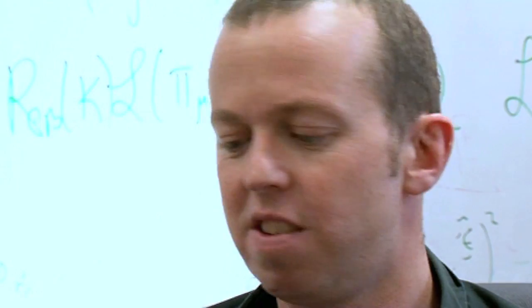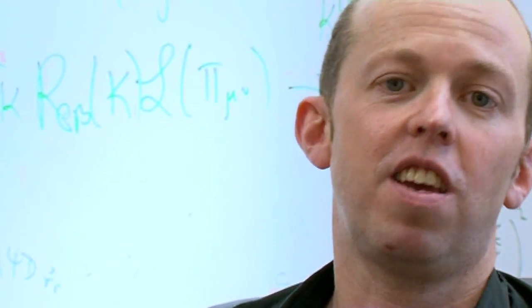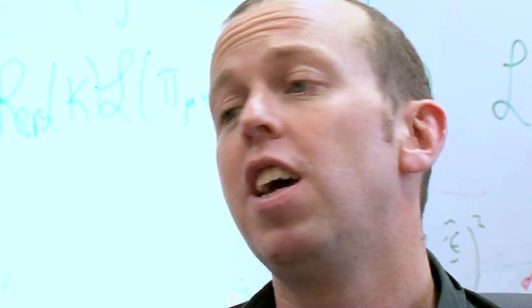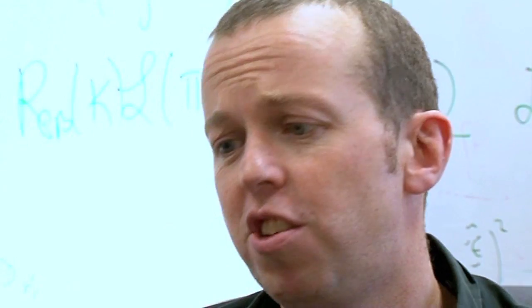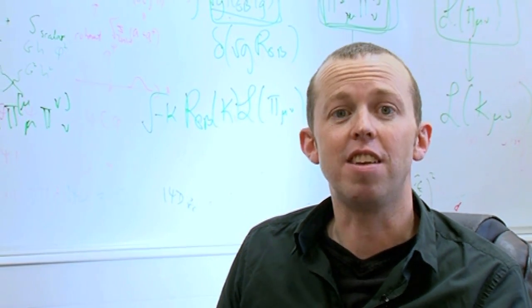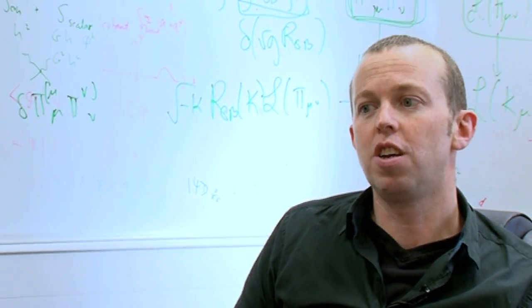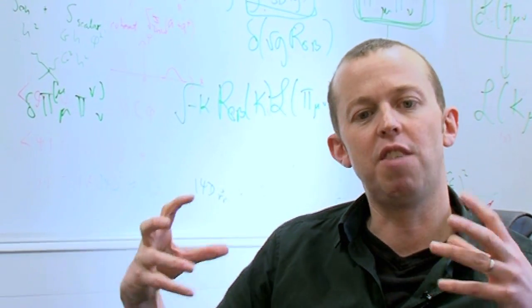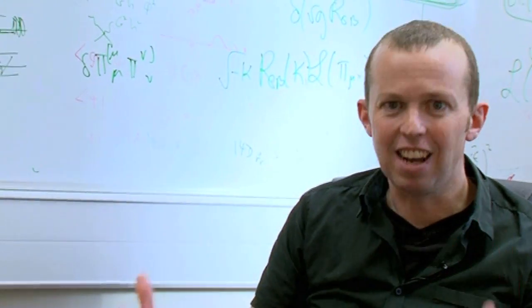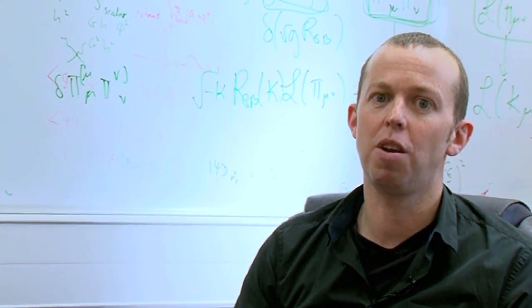Hawking has had three main scientific achievements in his career. The first is his singularity theorems. What Hawking and Roger Penrose realized is that if you assume matter has some generic properties that every sensible type of matter that we see in nature has, then you can prove that singularities exist within Einstein's theory of relativity. A singularity is a region of infinite density and infinite space-time curvature where all your field equations break down. What they're telling us here is that Einstein's theory actually has its limitations, that it predicts its own downfall.